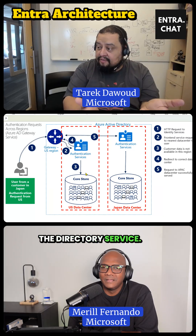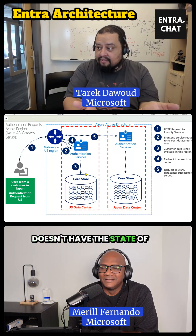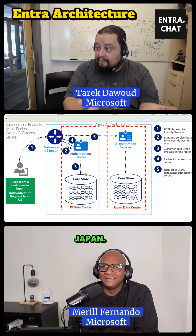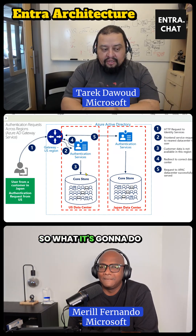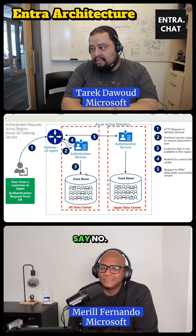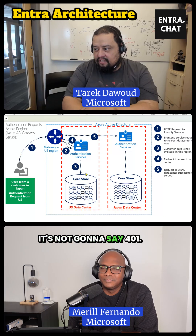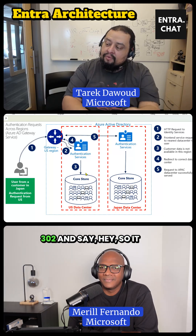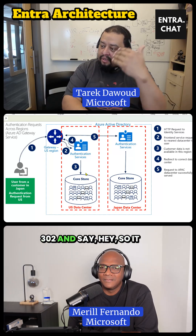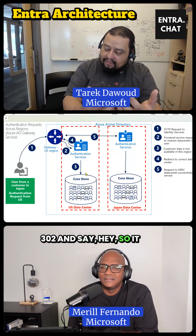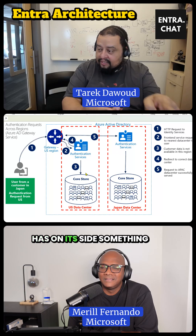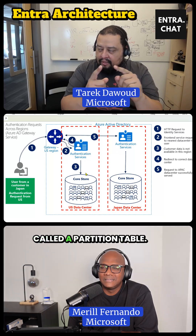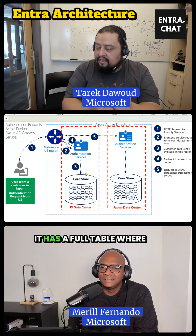The directory service doesn't have the state of this customer — he's in Japan. So what it's going to do, it's not going to say no, it's not going to say 401. It will actually give a 302, and it has on its side something called a partition table.